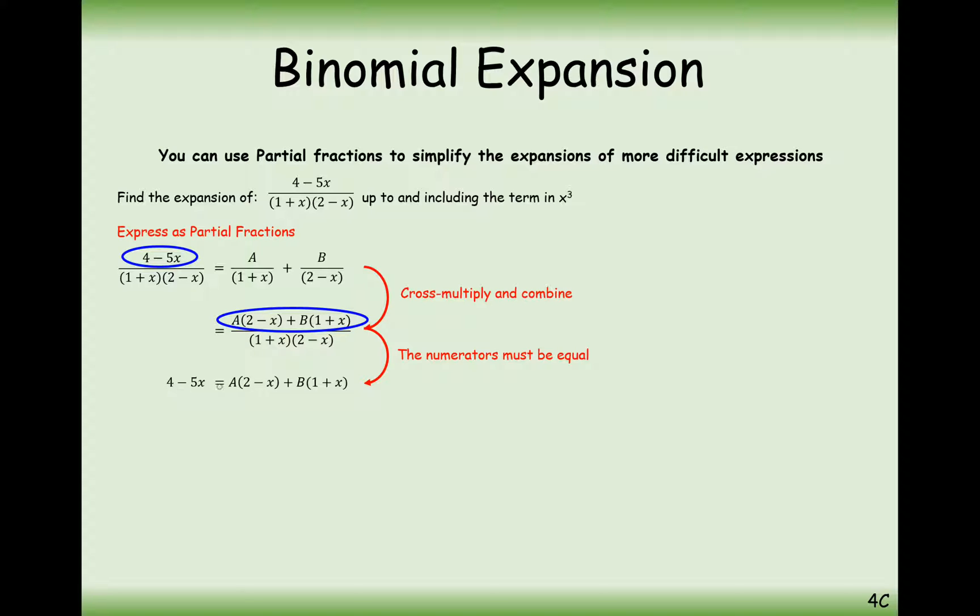In this case here, it's going to be 4 minus 5x equals A 2 minus x, B 1 plus x. And now we insert strategic values of x, so that we can work out what A and B are. So in this case, if we try x equals 2, then that will make the A bracket equal 0.